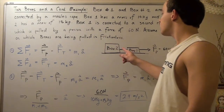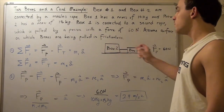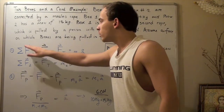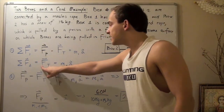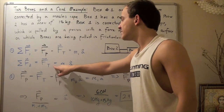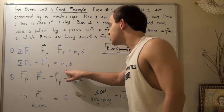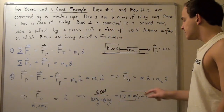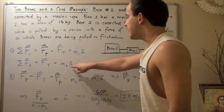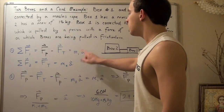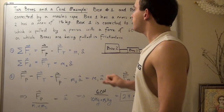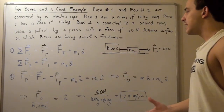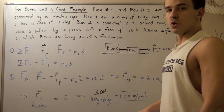Now suppose we want to find the tension in the rope — we can now find that. According to our second equation, the tension in the rope equals mass 2 times A. Now that we know the acceleration is 2.4 meters per second squared, we multiply it by 15 kilograms to get our tension in the rope.